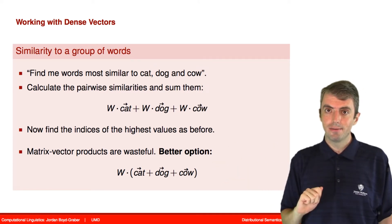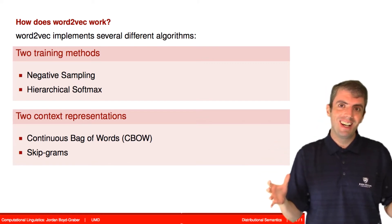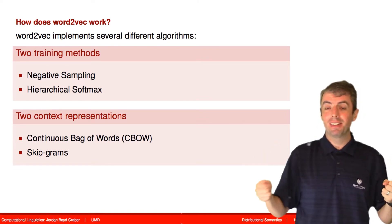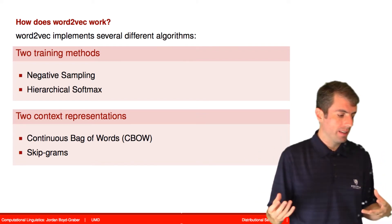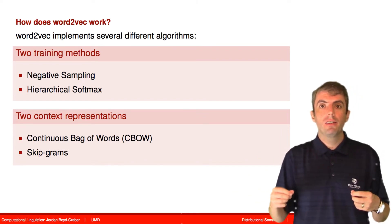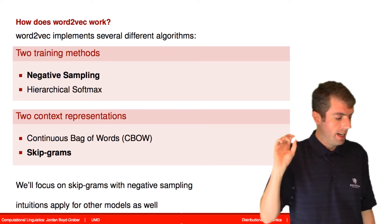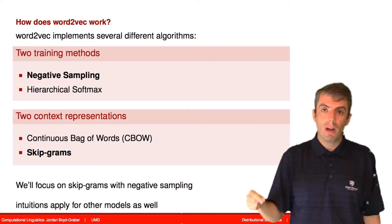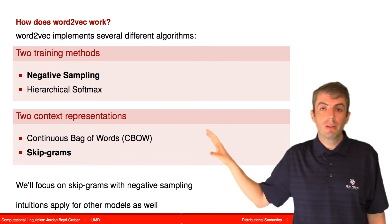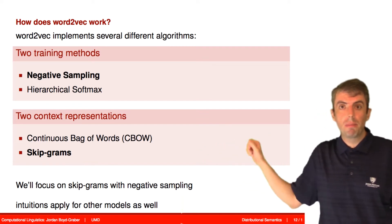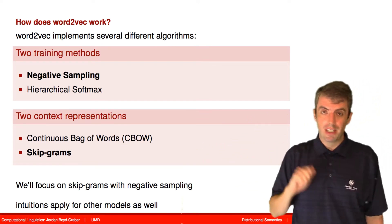When we talk about Word2Vec, we're often talking about a family of different implementations. There are different ways to do the training and different ways to represent the context. I'm going to focus on the negative sampling approach with skip-grams. The same intuitions apply to other methods, but to be precise, we'll focus on this combination.